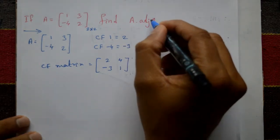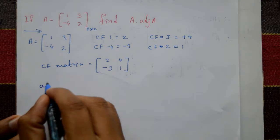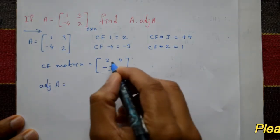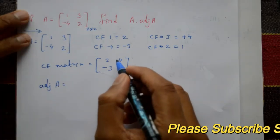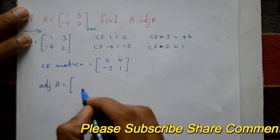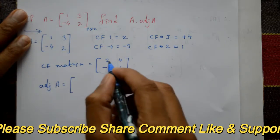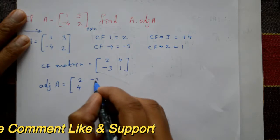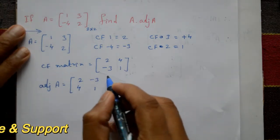Now adjoint of A is equal to this matrix transposed. You exchange rows into columns or columns into rows. First row becomes 2, -3. Second row becomes 4, 1. This is the adjoint of A.